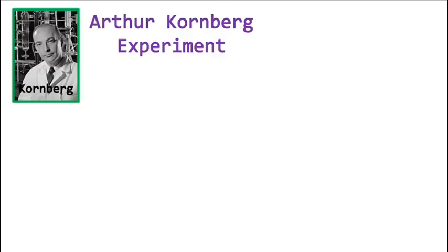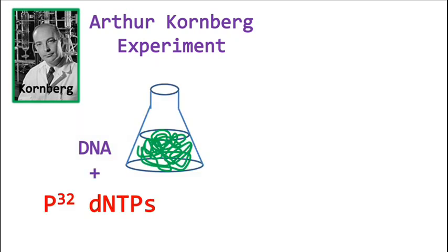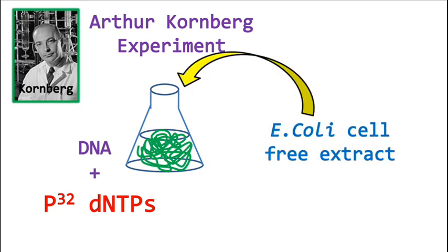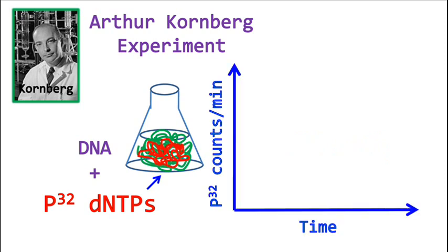Arthur Kornberg did some wonderful experiments to test this hypothesis. He took a DNA sample along with labeled dNTPs and added E. coli cell extract to this mixture. If the cell extract had any enzyme that could replicate the DNA, then the labeled dNTPs would get incorporated in the DNA, which can be easily detected. When he did this experiment, the hypothesis was found to be correct.